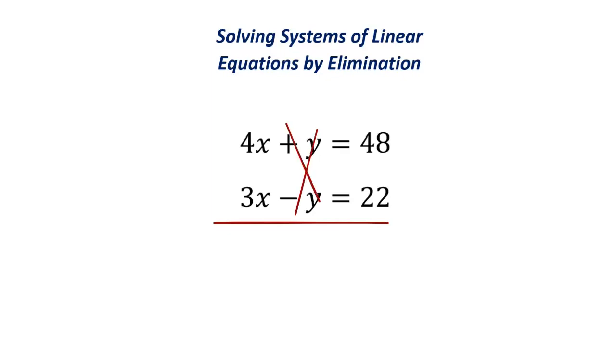So right off the bat, we didn't even have to do anything. And what you do now is you just add vertically like normal. So 7x equals 70, and we would end up with x equals 10.